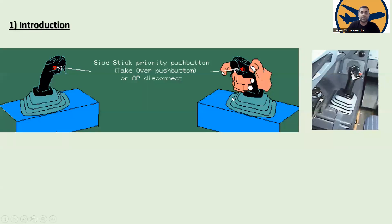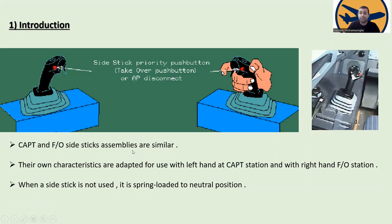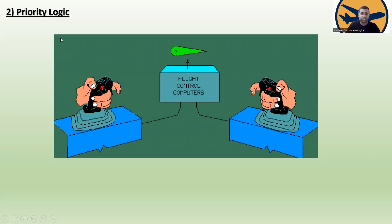In the introduction, you can see the side stick — on the left-hand side for the captain and the right-hand side for the first officer. This is the priority push button, also used for autopilot disconnection. The captain and first officer side stick assemblies are similar, but adapted for left-hand use at the captain station and right-hand use at the first officer station. When a side stick is not used, it is spring-loaded to the neutral position.